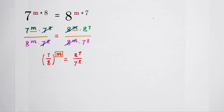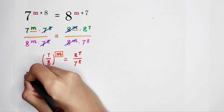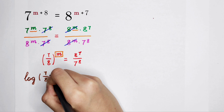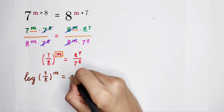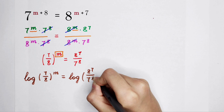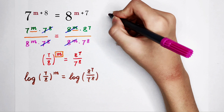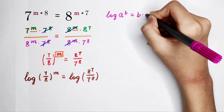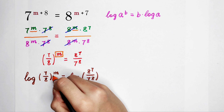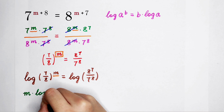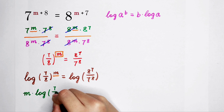Now the right-hand side is 8 to the power of 7 divided by 7 to the power of 8. Our work is to take the logarithms. That is, the logarithm of 7 over 8 to the power of m is equal to the logarithm of 8 to the power of 7 divided by 7 to the power of 8. We use the formula log(a^n) = n·log(a), so we take this m out and put it in front: m times log(7 over 8).